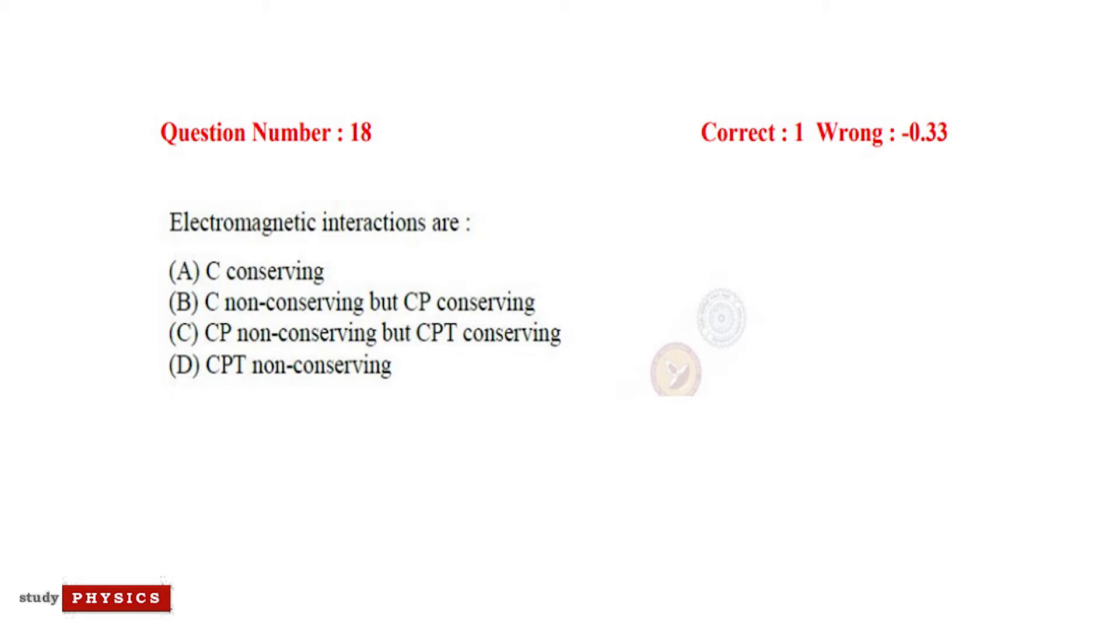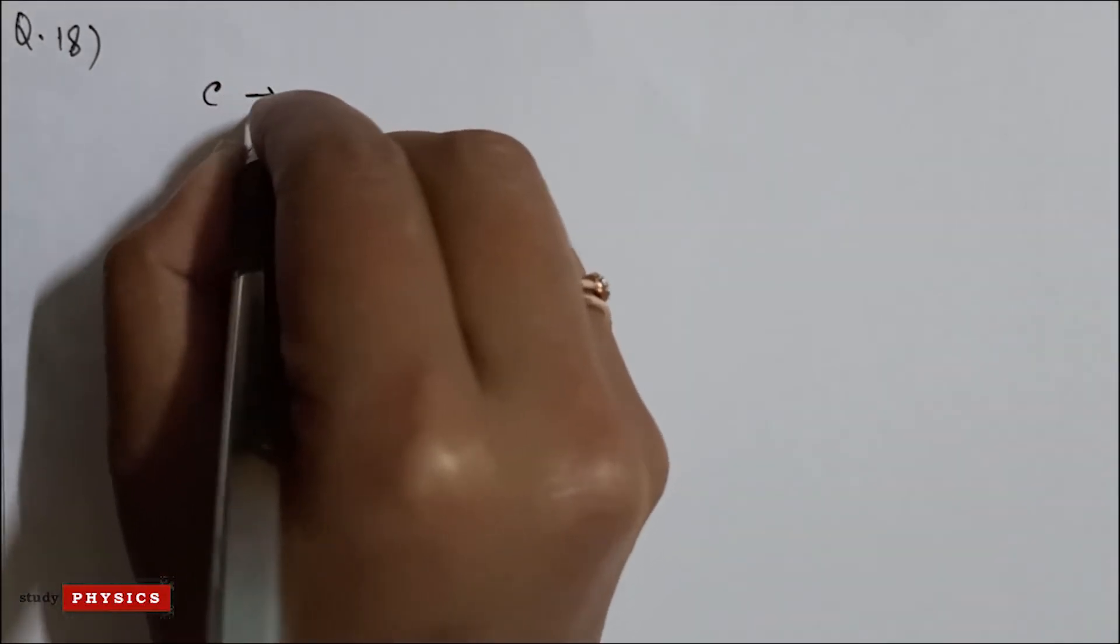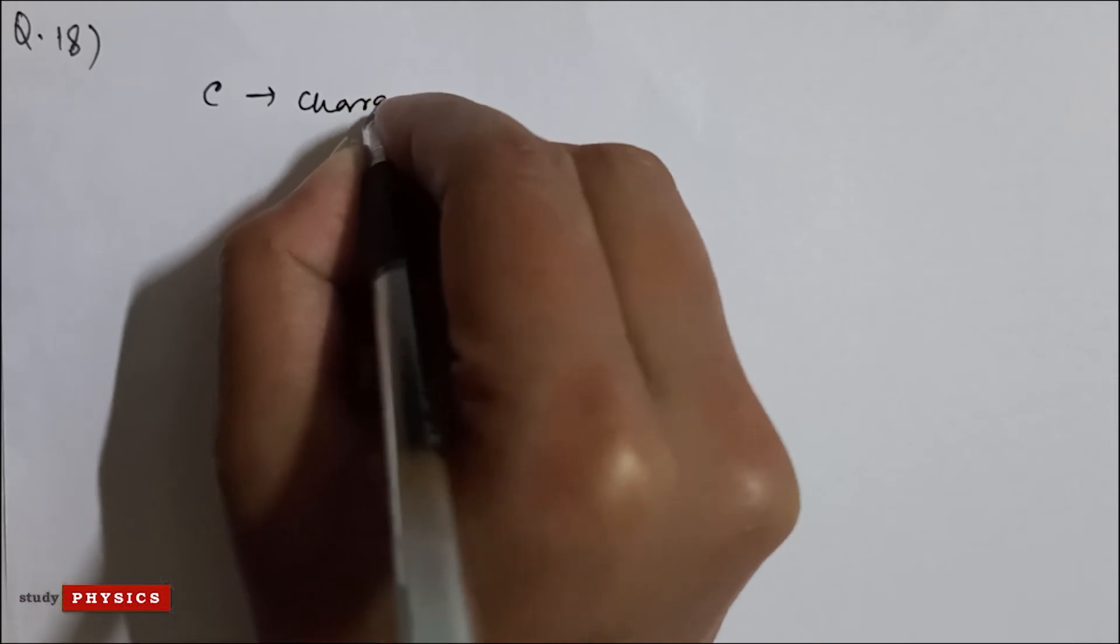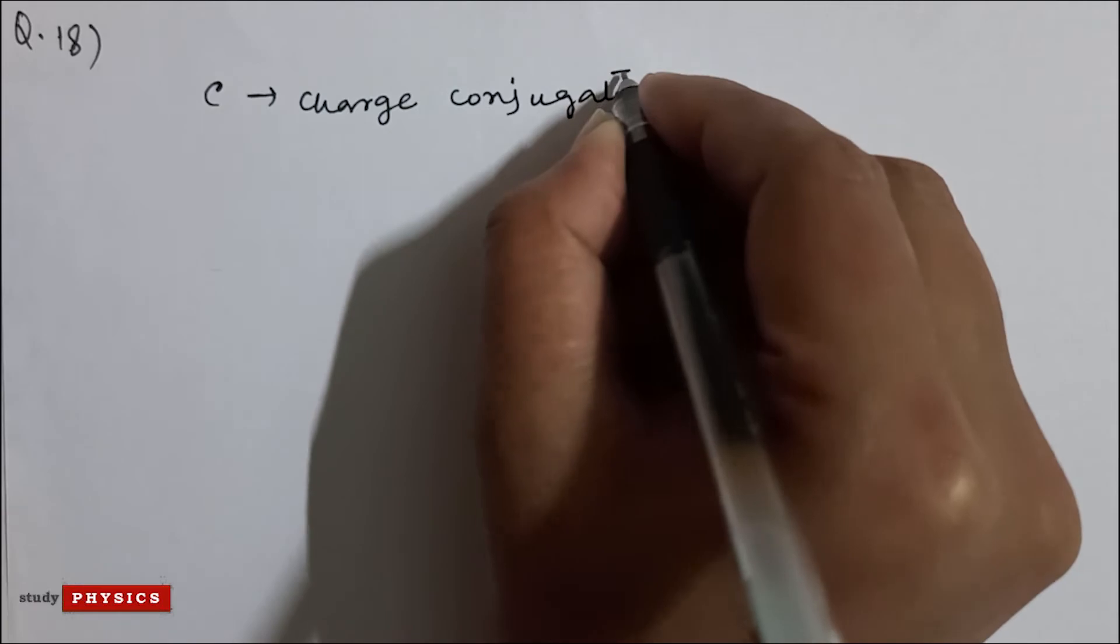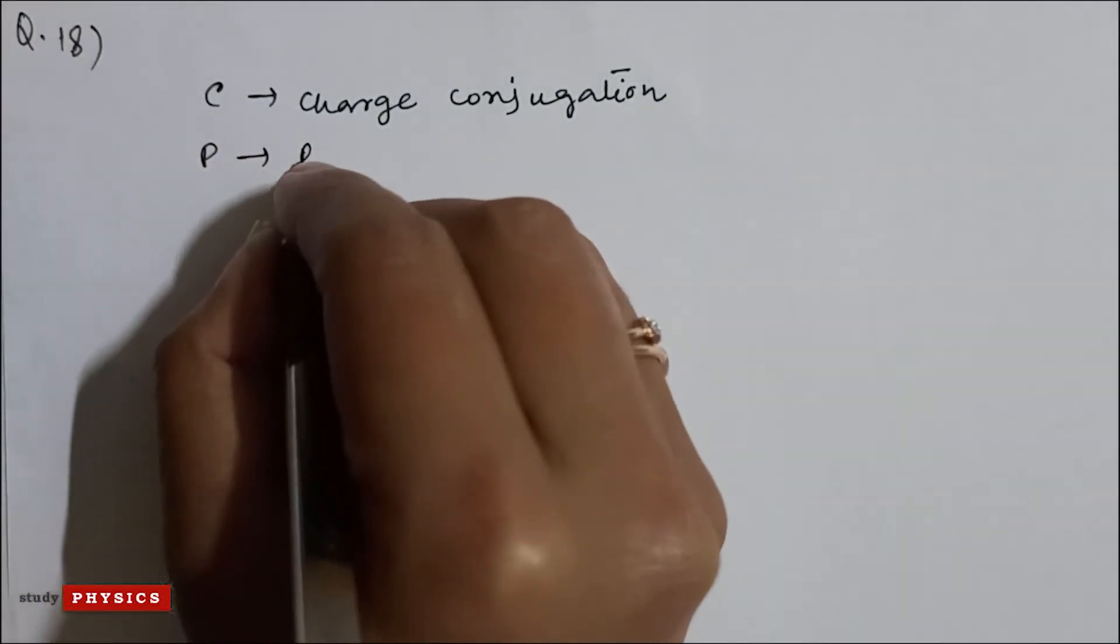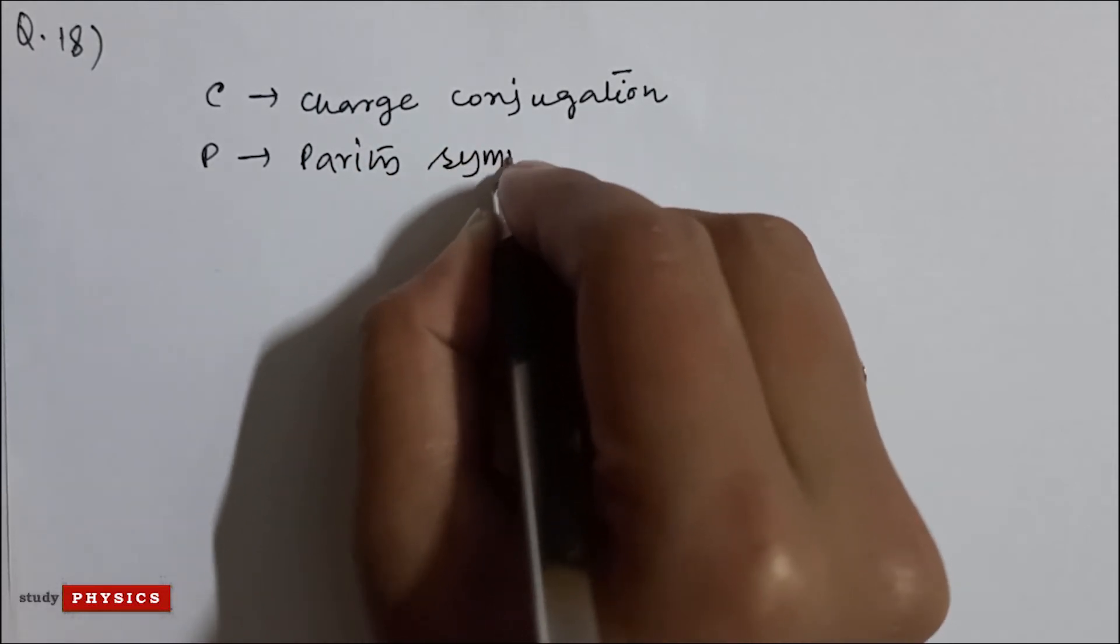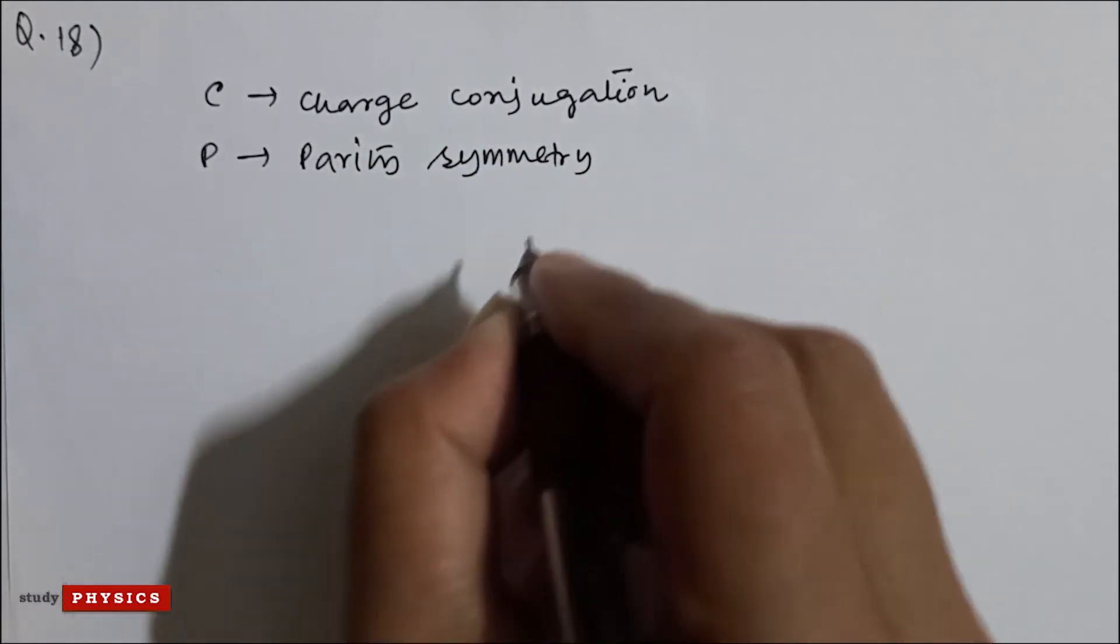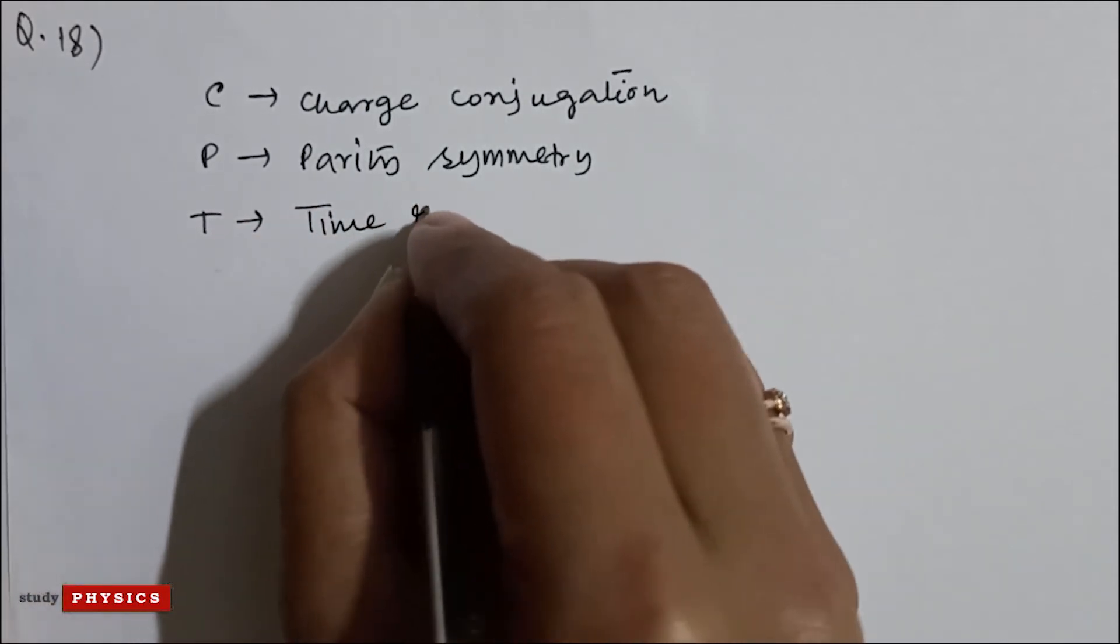D is CPT non-conserving. So, C is charge conjugation, P is parity symmetry, and T is time reversal symmetry.